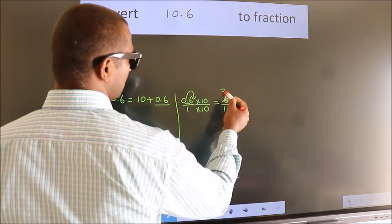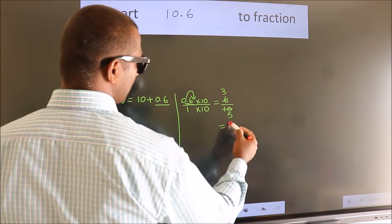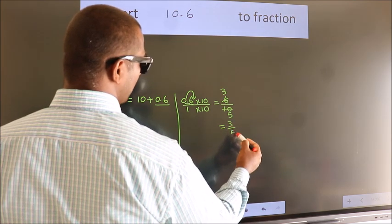2 3s, 2 5s. So the fraction we got is 3 by 5.